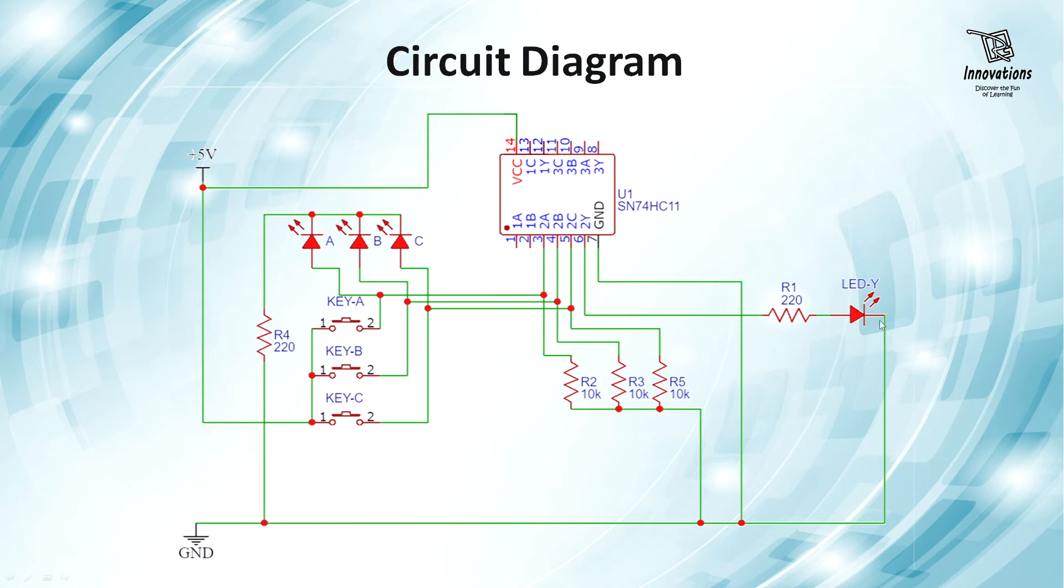We have connected pin number 6 to another LED which will show the output status. When the output is high, it will glow. When the output is low, it will not glow. We have used a resistance before the LED to limit the current. So this is the circuit diagram.